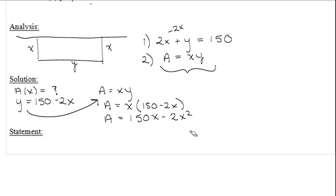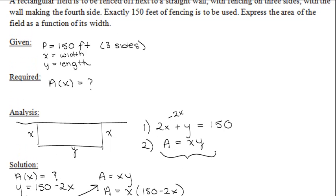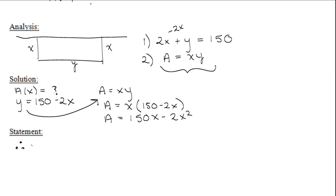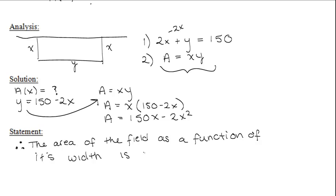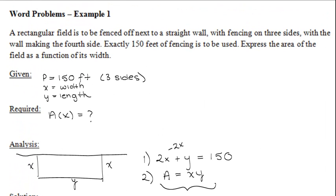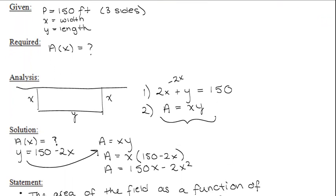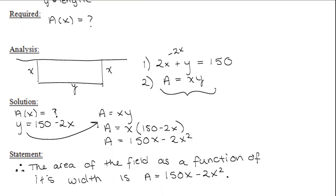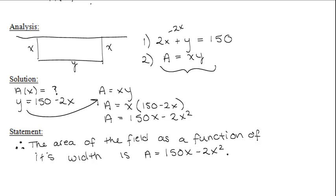The final step is the Statement. We write a therefore statement that includes part of the question. Therefore, the area of the field as a function of its width is A = 150x − 2x². That is how you solve a word problem: go through the steps — identify what you're given, what you're required to find, analyze the formulas and sketches, work through the solution, and state what you found.